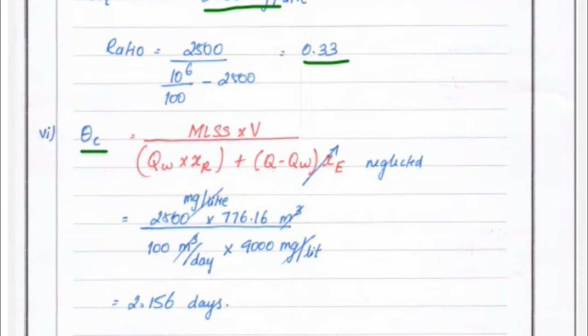Next, the age retention time theta C equals MLSS times V divided by QW times XR plus Q minus QW times XE. XE is neglected. MLSS equals 2500, volume we found is 776.16 meter cube, QW value is 100 times XR value 9000 milligram per liter. We got the value of theta C equals 2.156 days.